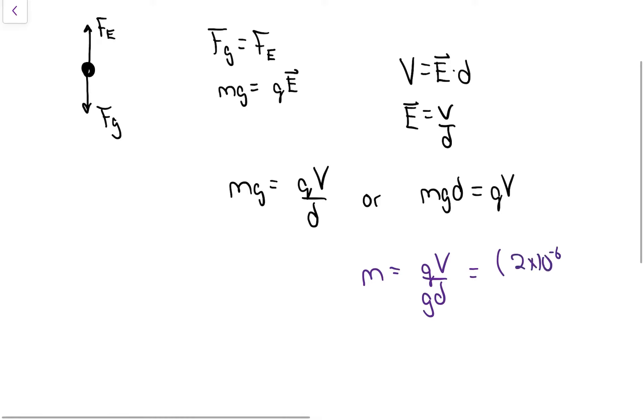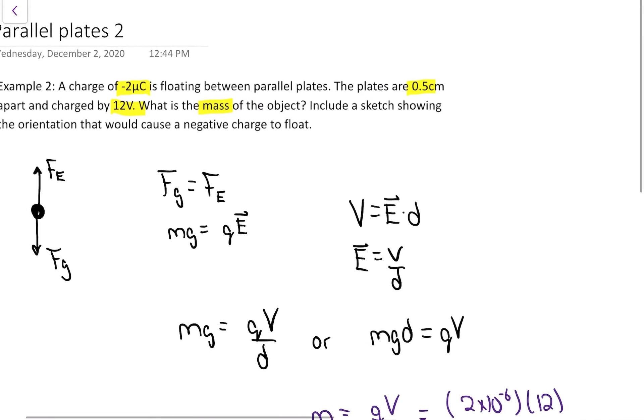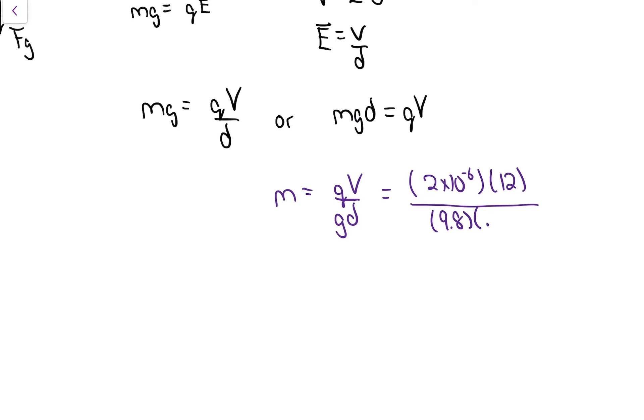The q was 2 microcoulombs, so 2 times 10 to the negative 6. I'm not putting the sign in - this is a vector thing, so the negative on a charge isn't really going to help me. I'll just calculate the number and use my brain to figure out signs and directions. The voltage was 12, g is 9.8, and d was half a centimeter, so 0.005 in meters.